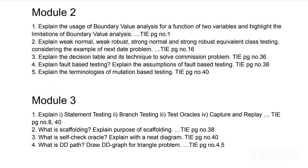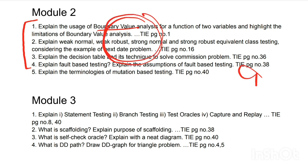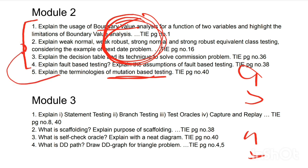Moving on to Module 2, we have four questions which are repeated a lot. If you analyze the previous five years' papers — including the 2015 scheme since the syllabus is the same — you'll find only these four questions are asked, revolving around the same topics. The fifth question on mutation-based testing replaces one of these. Study all of these and you can easily score 20 marks from Module 2.